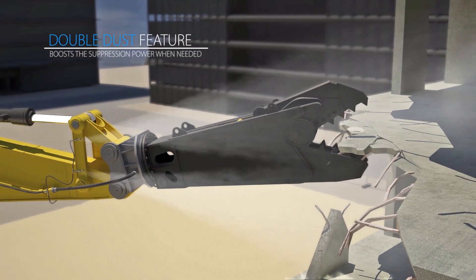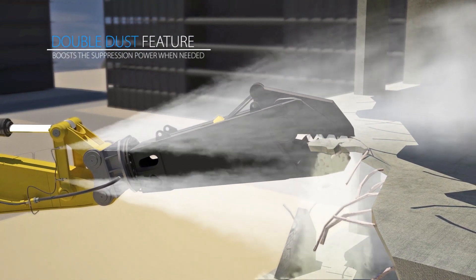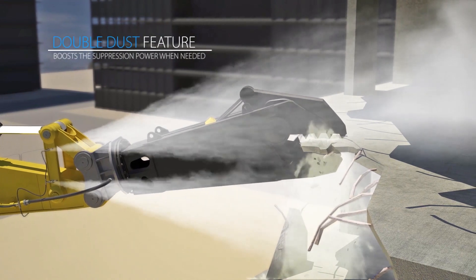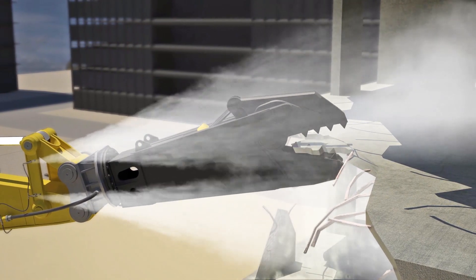HBWDust system can be installed with double dust feature. The double dust feature reduces the water consumption by providing basic dust suppression flow for continuous use and a high power flow when extra dust suppression power is needed.